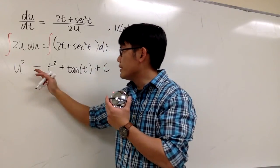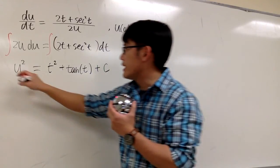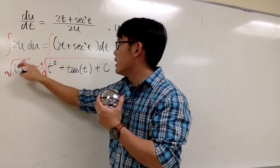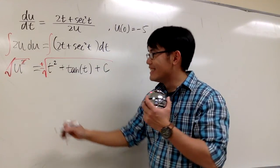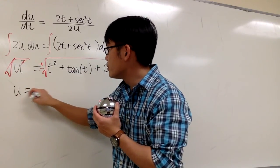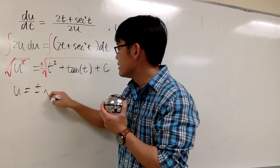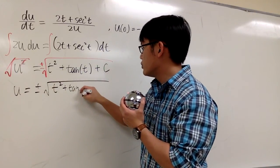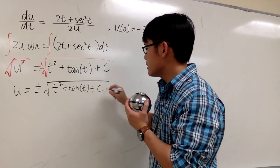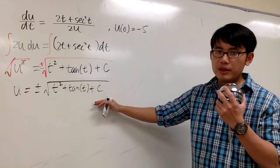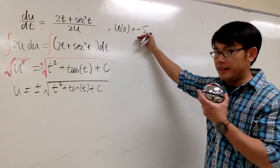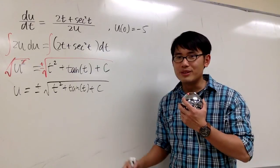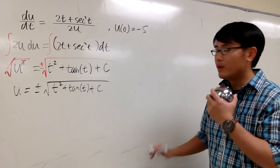Well, we have u² equals this expression. Let's take the square root on both sides so we can isolate the u expression. And we have u equals ±√(t² + tan(t) + c). Normally it would be done, but then here we are given an initial condition. We must make sure that this initial condition comes to play right here with our equation.